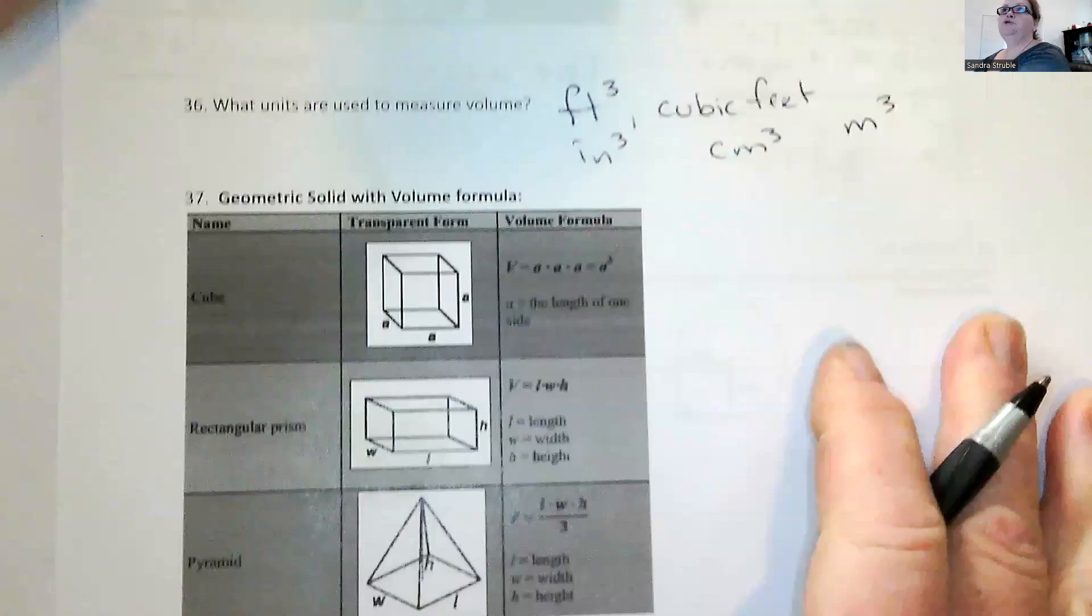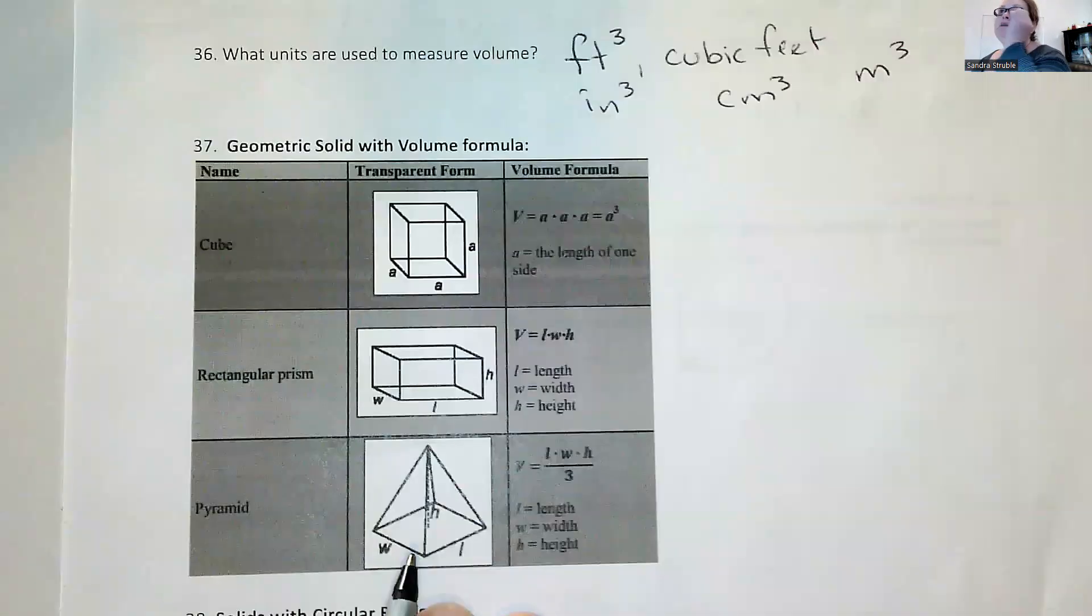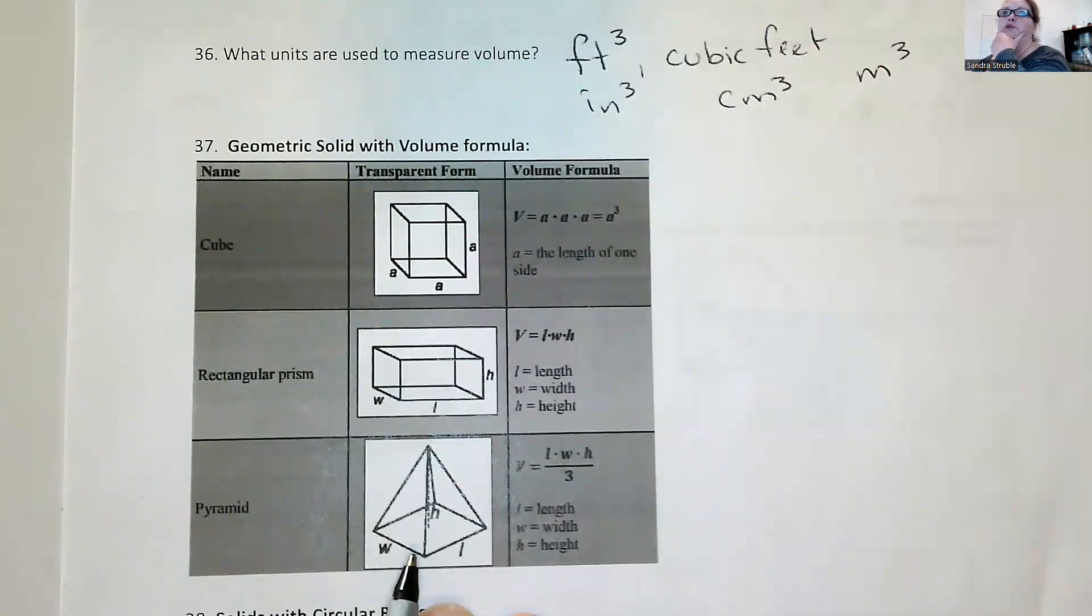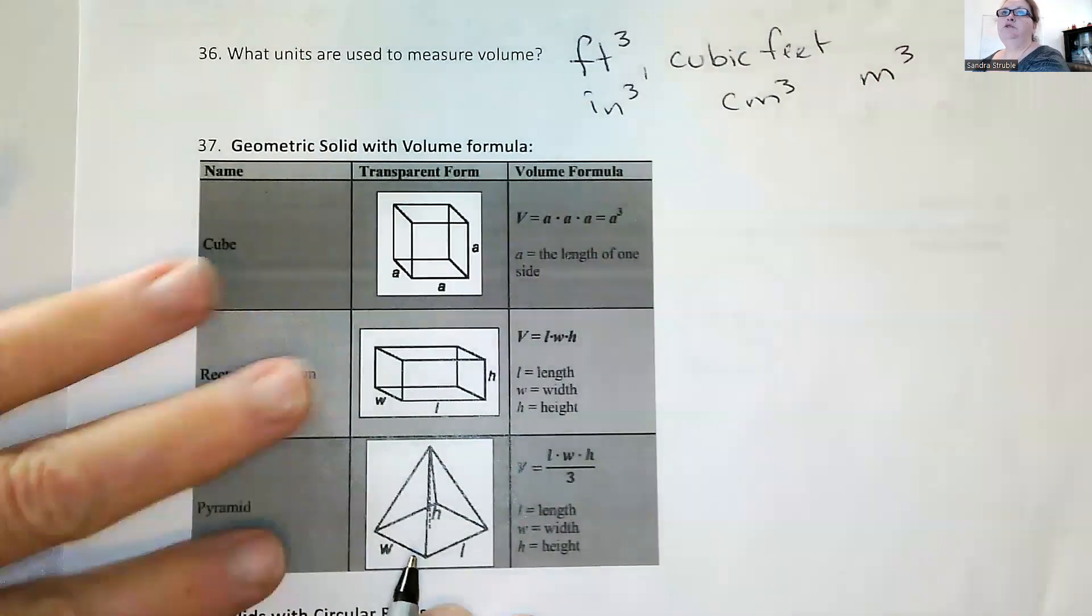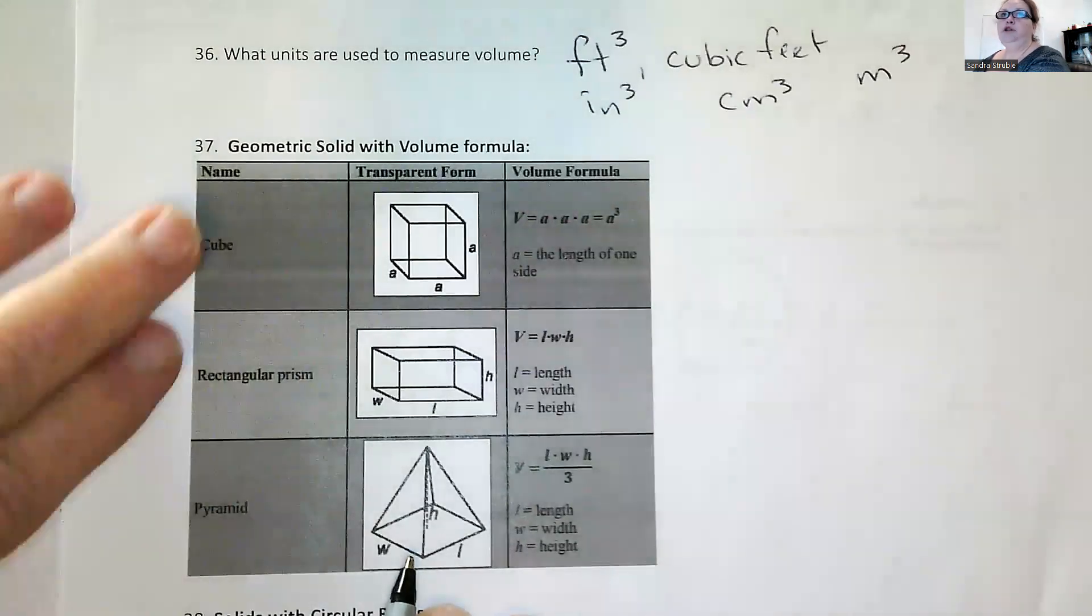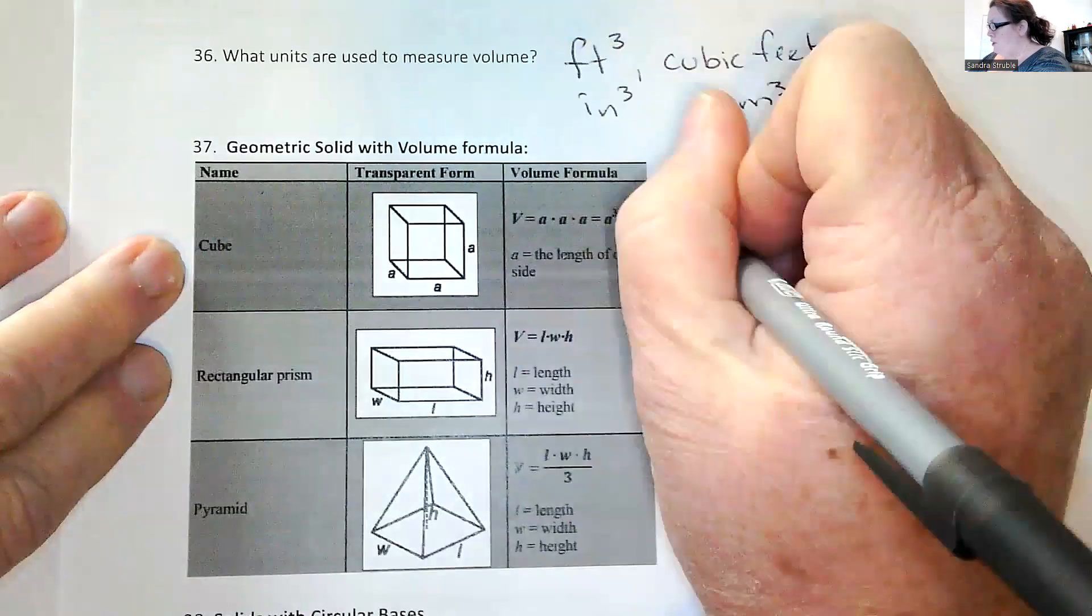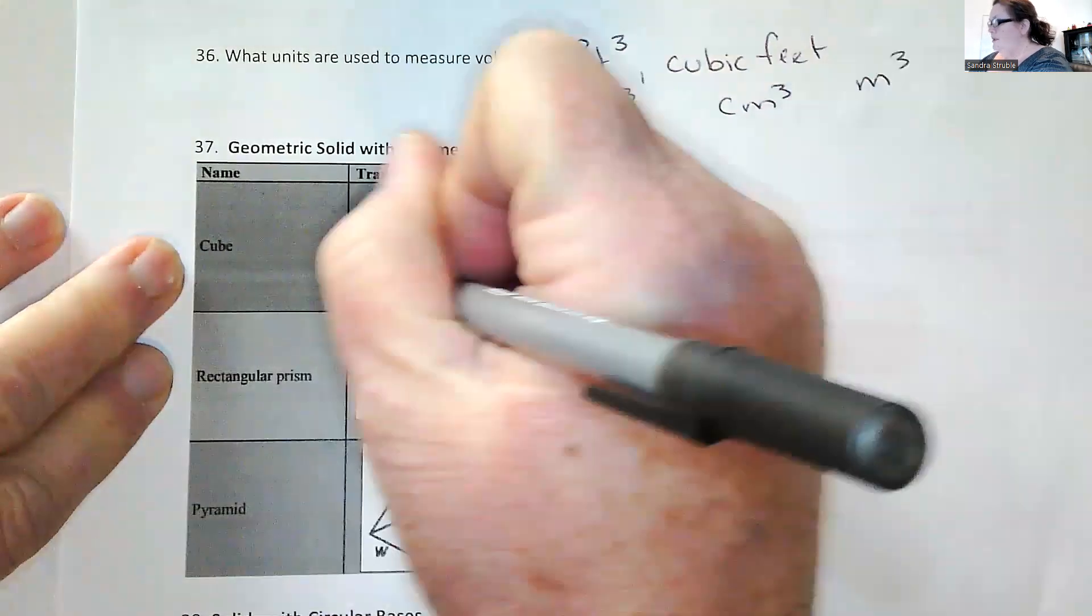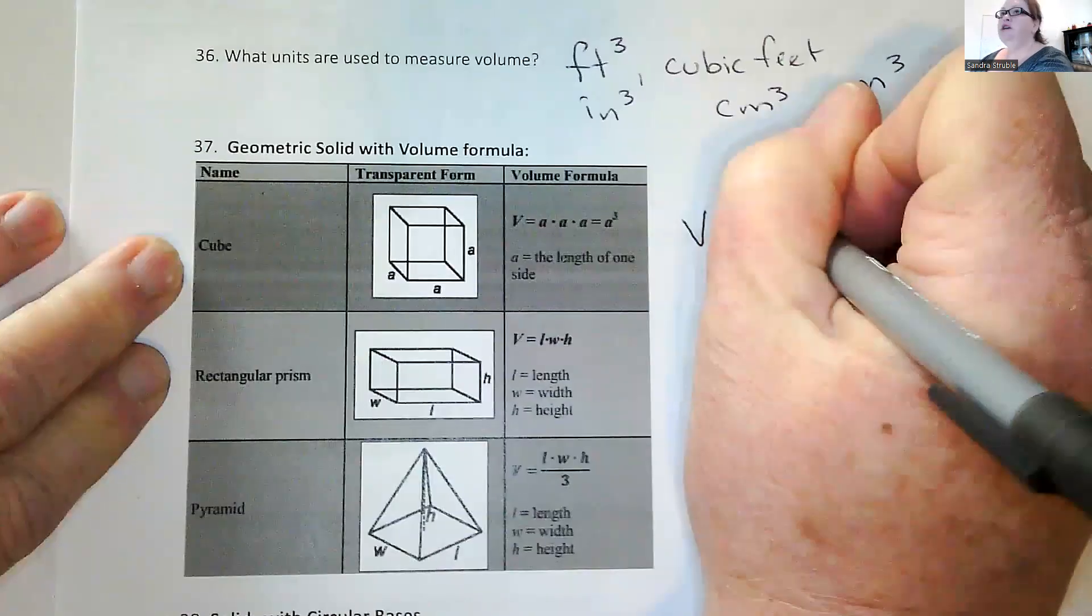So you're going to need to have access to this information when you're taking your test. So make sure that you've got good notes on your volume formulas. For a cube, the volume of a cube is just the length of one of the sides cubed.